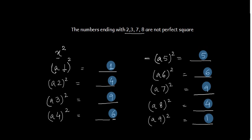But in any case, 2, 3, 7, 8 - if these are the digit at unit place, the number is not a perfect square. So yes, these are the two facts for today. Thank you.